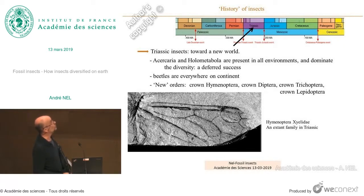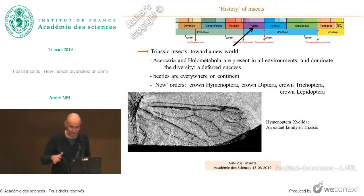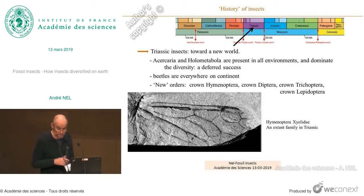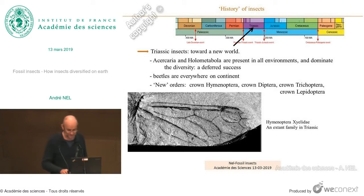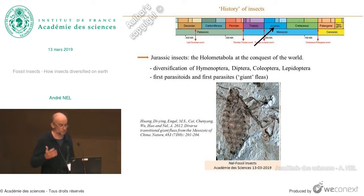The Triassic represents a big change — the first major change since the origin of wings. With the extinction of ancient groups like Palaeodictyoptera, there was an opportunity for holometabola to diversify, and they came to dominate the environment. You have beetles in all outcrops dominating diversity. You also have the oldest flies and oldest Hymenoptera. The oldest flies are known from the Triassic of the Vosges in France and were already diverse, so they are certainly older. Hymenoptera, Diptera, and Lepidoptera, first recorded in the late Triassic, diversified greatly in the Jurassic.